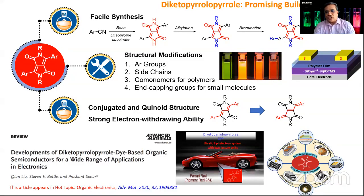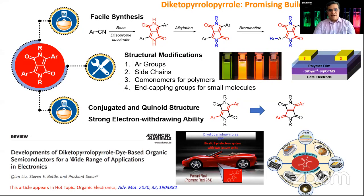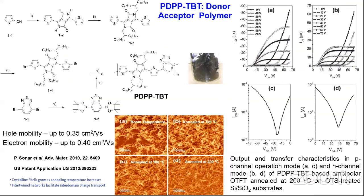Looking at the synthesis of this dye, we can really do a very easy synthesis. If we want to make low cost printable inks of these materials for future flexible or wearable electronics, we need to consider synthesis cost and high purity. Taking any aromatic carbonitrile, we can create this DPP dye, then do bromination. Once brominated, we can functionalize it and make molecular material or polymer material. Recently, my student and I authored a nice review that covers all important aspects of DPP-based materials for different applications.